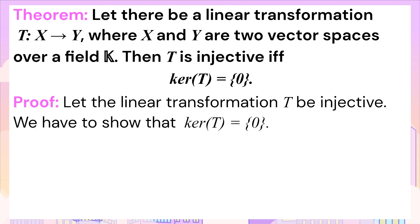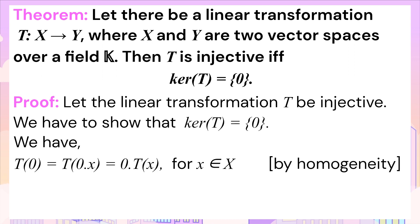Assume that T is an injective linear map. We have to show that the kernel of T is singleton zero. This can be established by using the set inclusion principles. If we take T(0), then we can also write it as T(0·x) for any vector x in the vector space X by the homogeneity property of linear transformations.